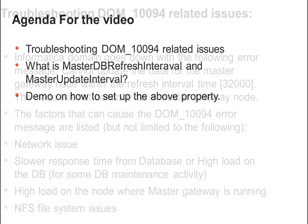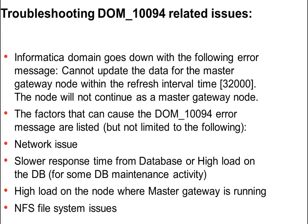Let's begin with how to troubleshoot DOM_10094 related issues. The Informatica domain goes down with the following error message: 'Cannot update the data for the master gateway node within refresh interval time 32,000. The node will not connect as a master gateway node.' For a single node setup, the value will be 96,000 milliseconds.